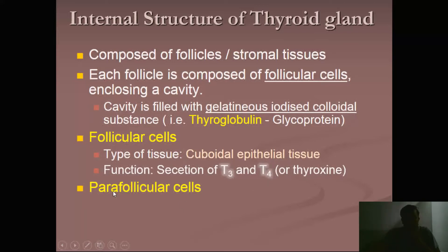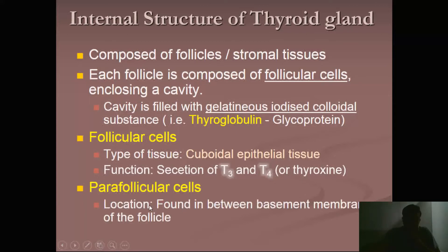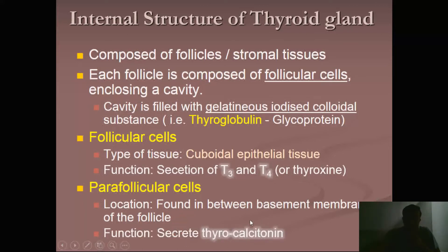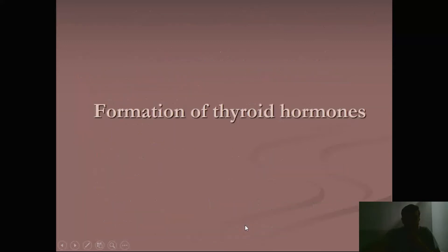Moving toward parafollicular cells: their location is found in the basement membrane of the follicle. The epithelial cells at the bottom have a basement membrane, and just outside this basement membrane these cells are located — 'para' refers to outside here, meaning outside the follicular tissue. The function of parafollicular cells is the secretion of thyrocalcitonin, which we will discuss in an upcoming lecture.